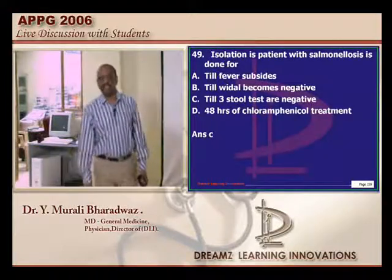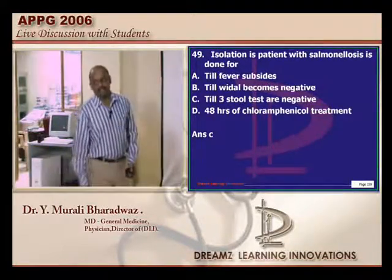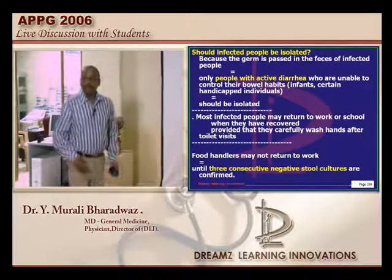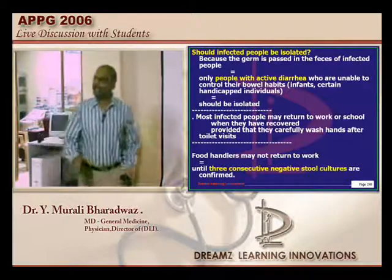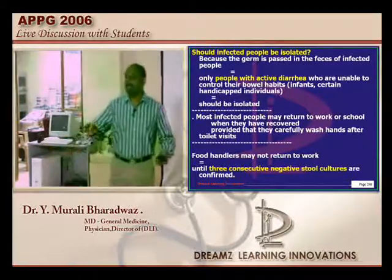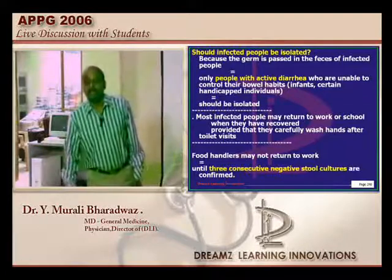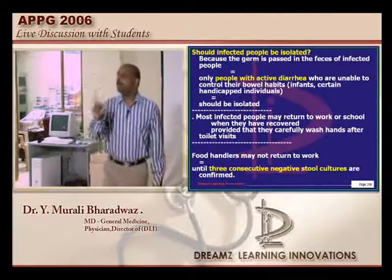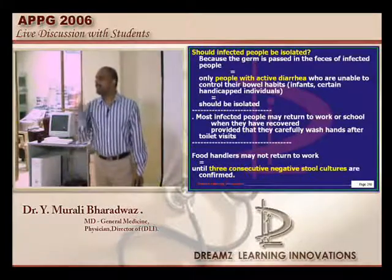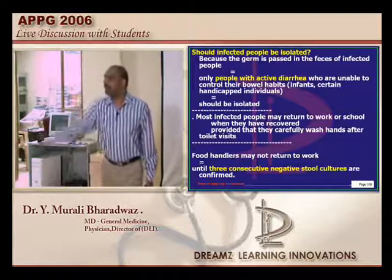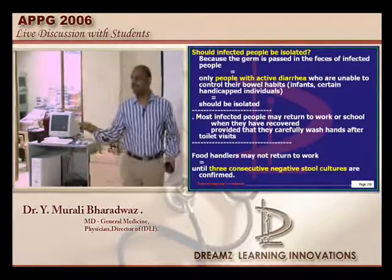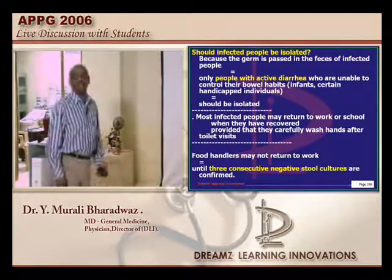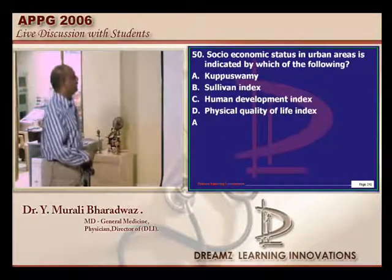Regarding Salmonella losses — typhoid individuals generally need not be isolated, only until they have active diarrhea, especially when diarrhea is very profuse. But if the individual is by occupation a food handler, you must ensure that three consecutive stool samples are negative for Salmonella before permitting them to return to work as a food handler. Three consecutive negative stool cultures are required — that is the answer.